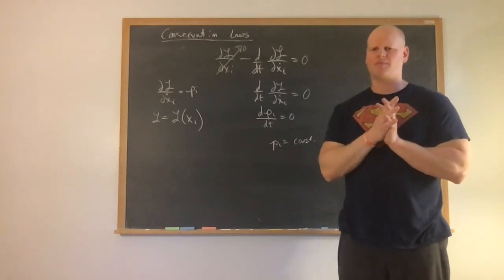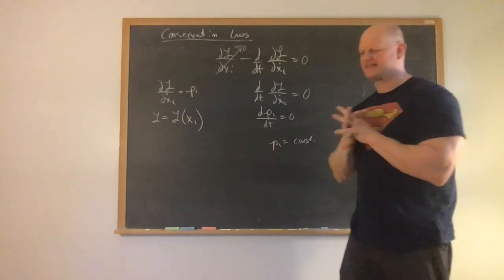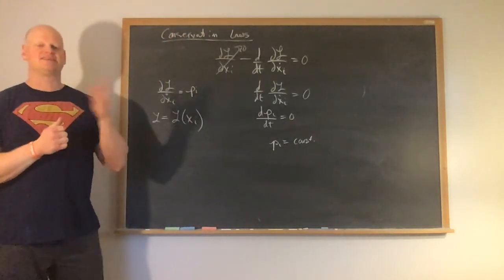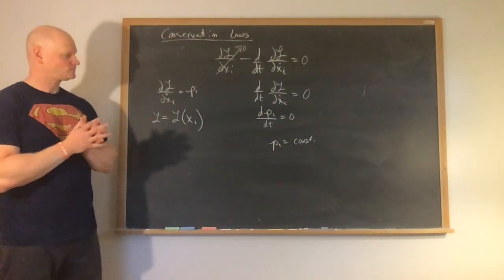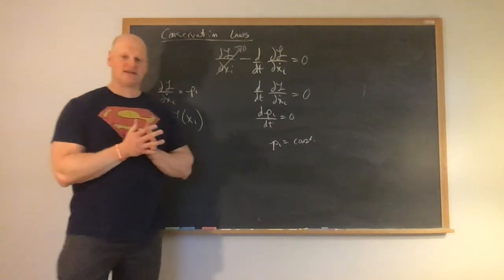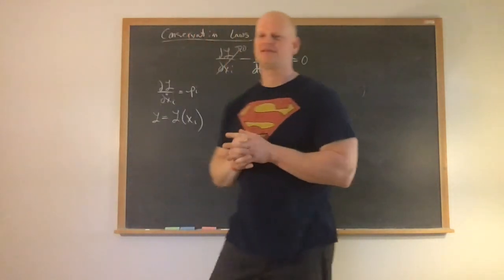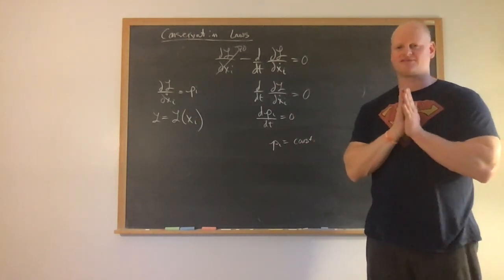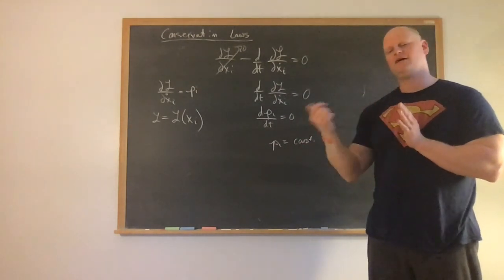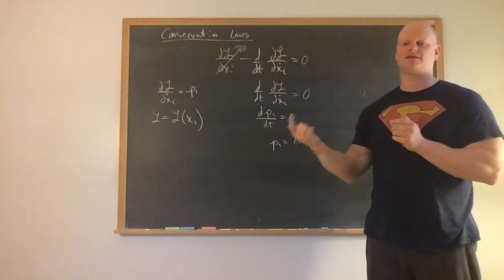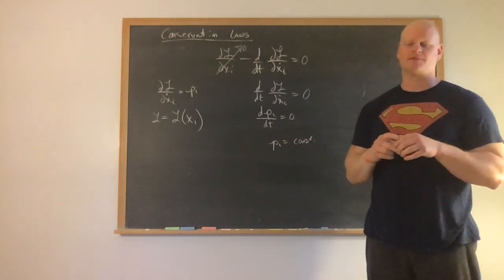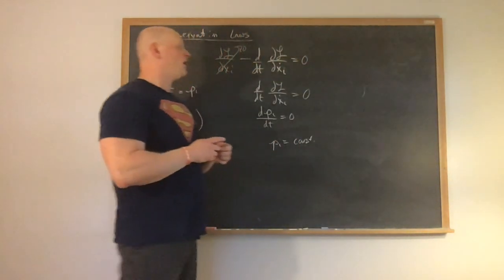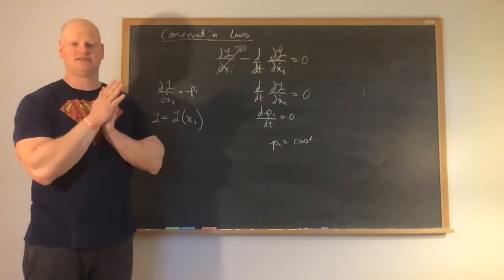So this is the last thing we're going to talk about: looking at conservation laws and how they pop out from symmetries. If the Lagrangian is time independent, that gives conservation of energy. If it's position independent, that gives conservation of momentum. And if it's angle independent, then that gives conservation of angular momentum. So that's it—that's the end, that's everything we're going to talk about.